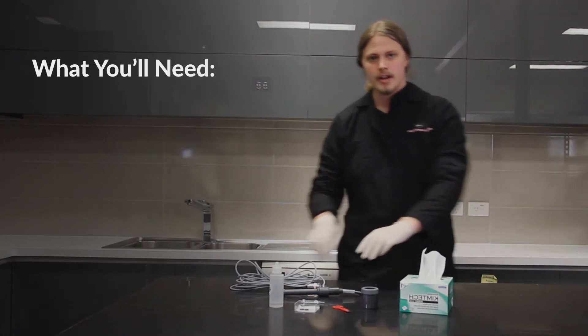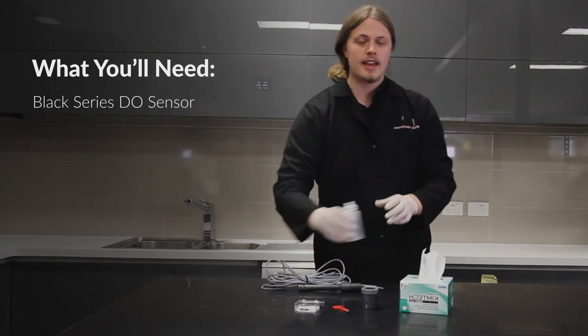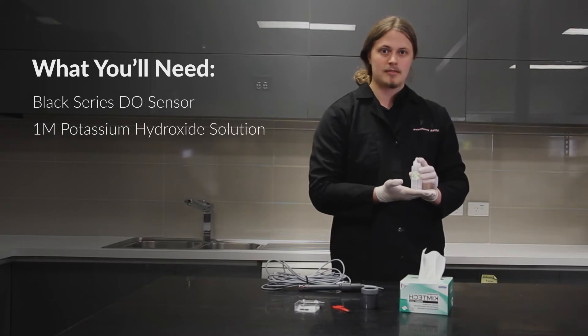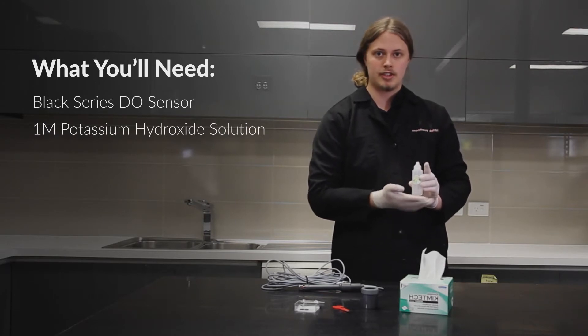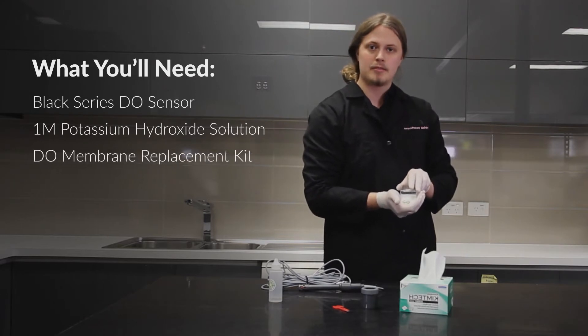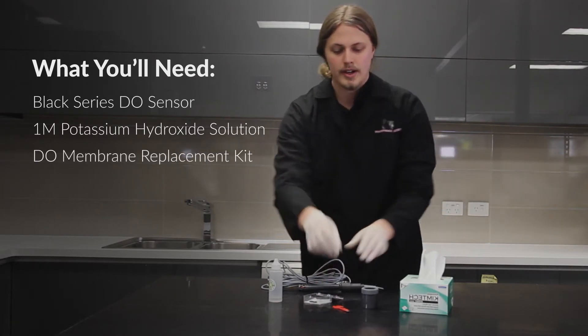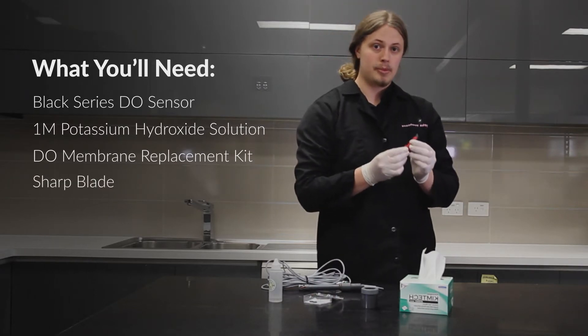Alright, to do this process you'll need: one N4M sensor, a bottle of 1M potassium hydroxide solution, a membrane replacement kit with at least one membrane and one O-ring, and a sharp knife or box cutter.